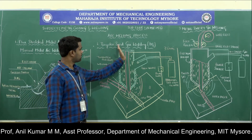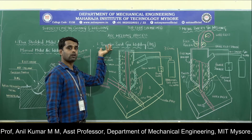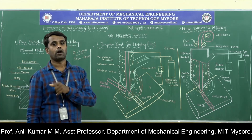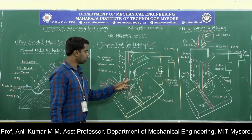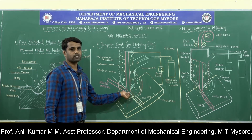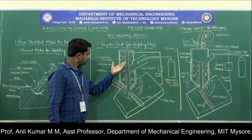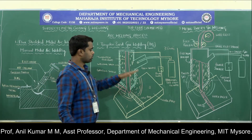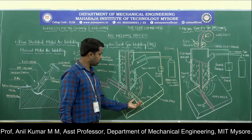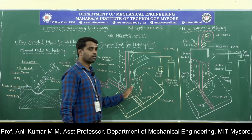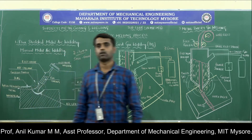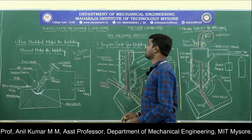In TIG welding, the tungsten electrode used is non-consumable. Inert gases are supplied into the welding area to protect the molten metal from the atmosphere. Because a non-consumable electrode is used, separate filler material is added to fill the gap between the two metal pieces. The two workpieces are joined by heat generated by the electric arc struck between the non-consumable tungsten electrode and the workpiece material in the presence of inert gases, which form a gaseous shield protecting the molten metal.